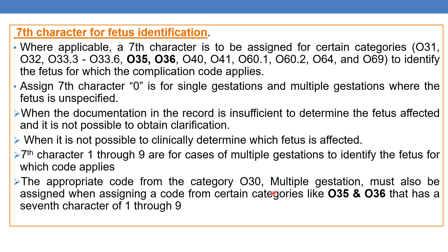An appropriate code from category O30 — multiple gestations — must also be assigned when assigning a code in categories O35 and O36 with seventh character 1 through 9. Seventh character 1 through 9 is not applicable for character 0, which is for single gestations and unspecified. Whenever applying seventh character 1 through 9, you must assign an additional code from category O30, multiple gestation, in addition to the codes from these categories.